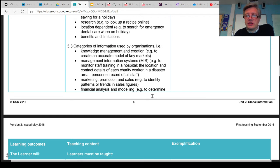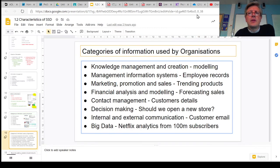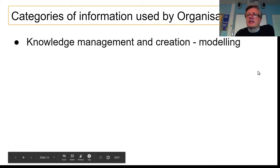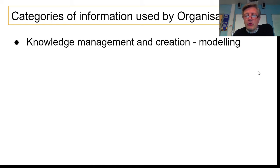But as an organisation, as a business, as a charity, whatever their reason for existing is, they will have information that's specific to them, and they will use that information to do certain jobs for them and help them to make decisions. So there are several ways that the exam board wants us to know about in terms of the way organisations use their specific information.